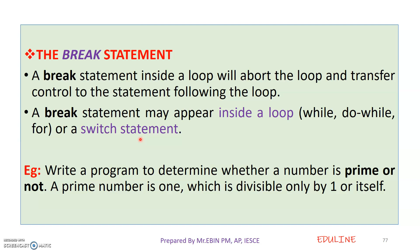Now we have an example. Here we need to write a program to determine whether a number is prime or not. We will go into the next class. So what is a prime number? A prime number is one which is divisible only by one or itself.